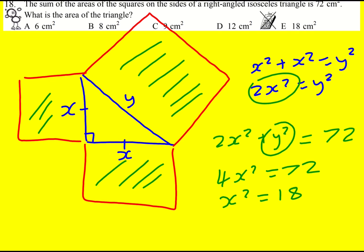And actually, that means we're pretty much there. We don't even need to find y. The area is going to be a half times x times x. So it's going to be 9.